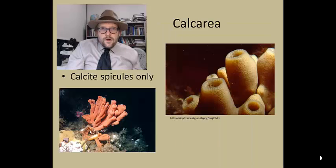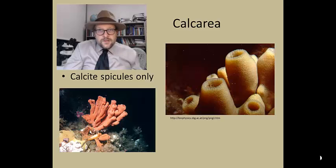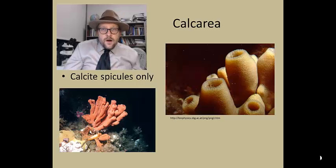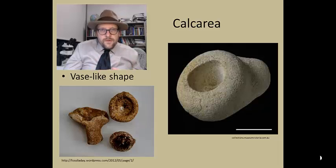The Calcarea are sponges composed of calcite spicules rather than silica or spongin. These are more common in the Mesozoic, and many forms of Calcarea are living today. Fossil forms tend to fossilize well and are often vase-shaped with a large opening for the osculum.